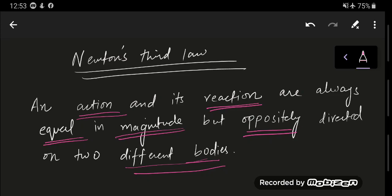What I'm going to talk about in this video is the famous Newton's Third Law, which states that an action and its reaction are always equal in magnitude but oppositely directed on two different bodies. This law specifies that there is an action and reaction pair which is equal in magnitude but oppositely directed on two different bodies.